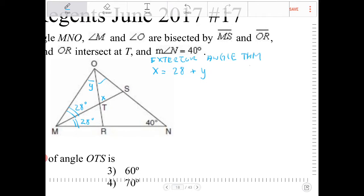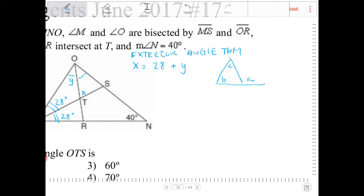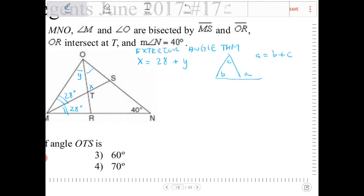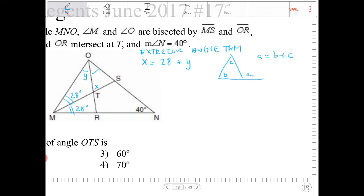And what that says is if you have a triangle on the outside, A, B, and C, angle A is going to equal the sum of the two interior angles there. That's the exterior angle theorem.